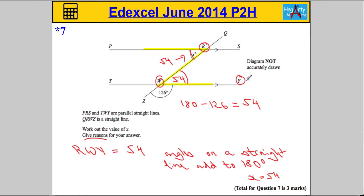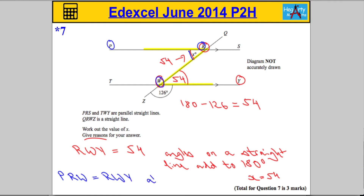We also know that angle YWR, which is the angle we just found, is the same as angle PRW — that's the angle x. So we write: angle PRW equals angle RWY, and the reason is alternate angles are equal.